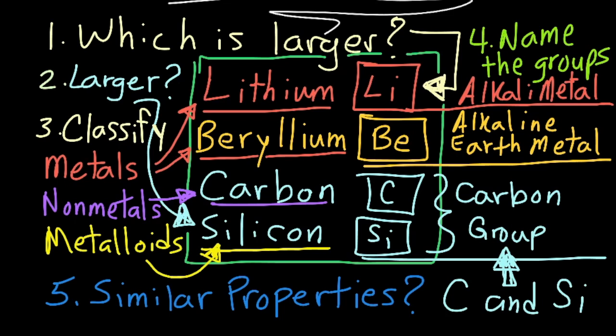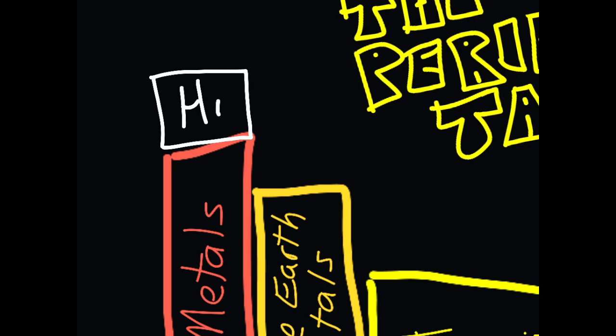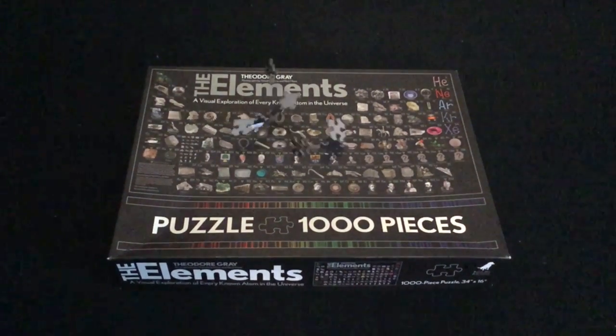And please comment below if you have any questions about the groups of the periodic table. Also, create and share your own examples about the element groups or atomic radius for others to answer in the comment thread.